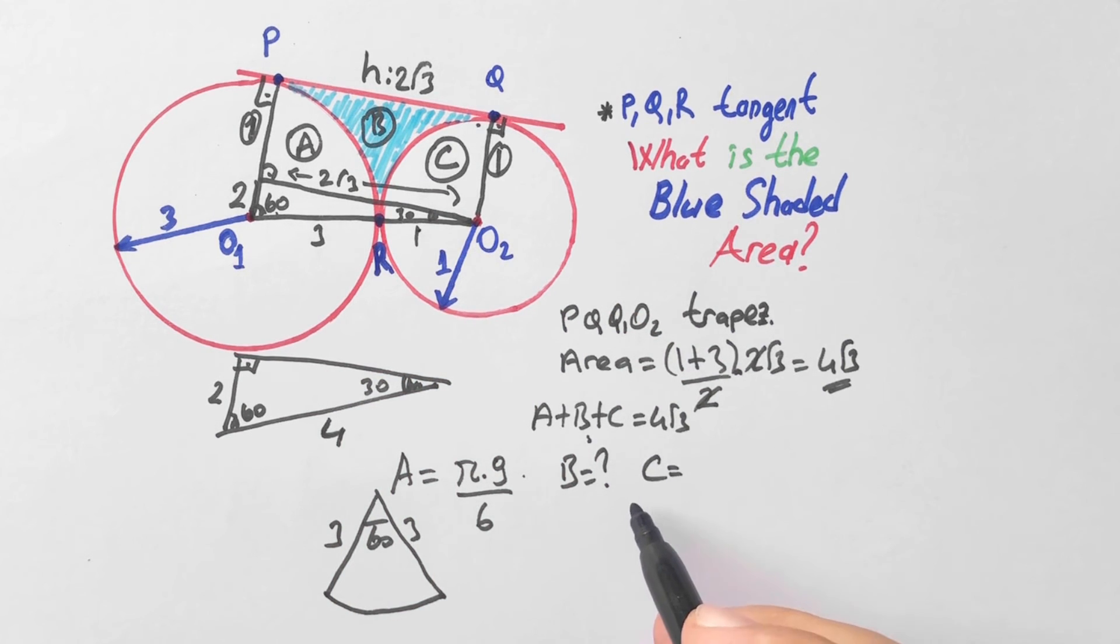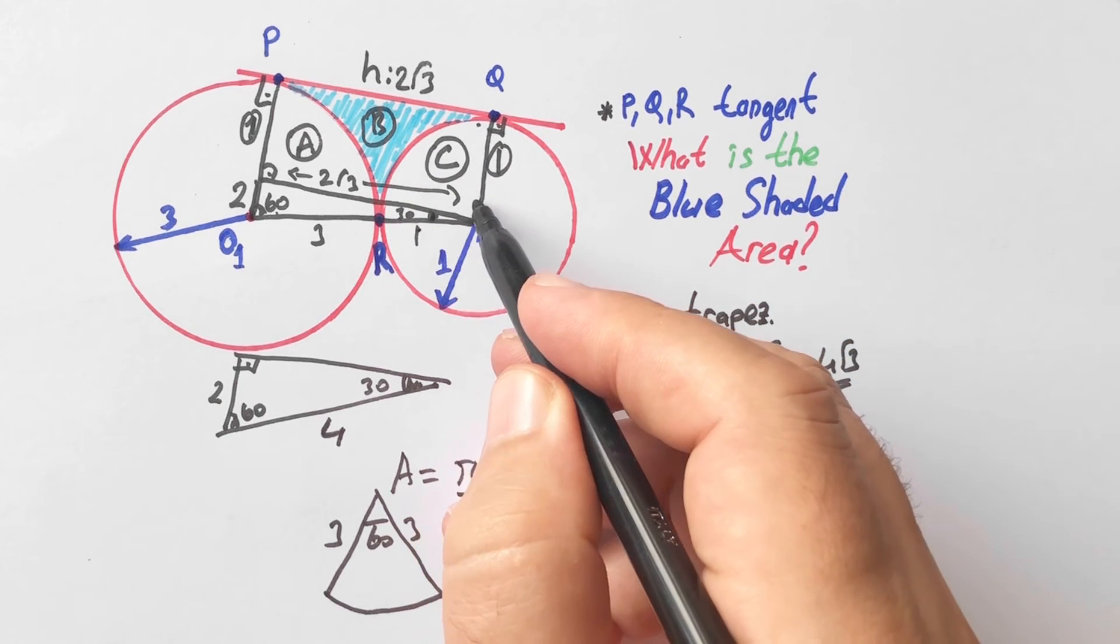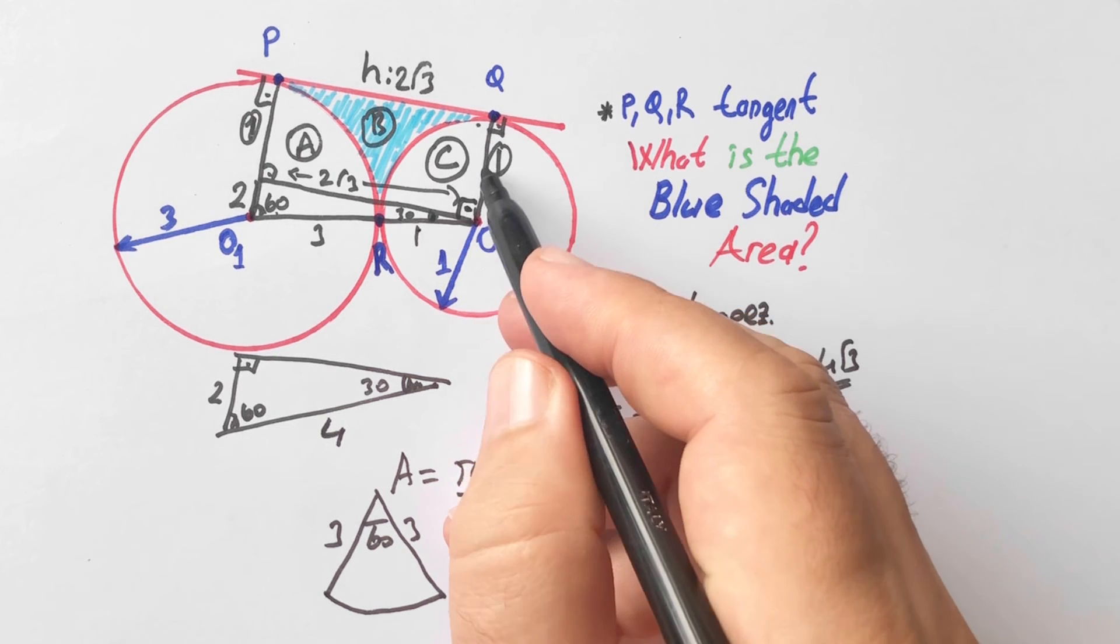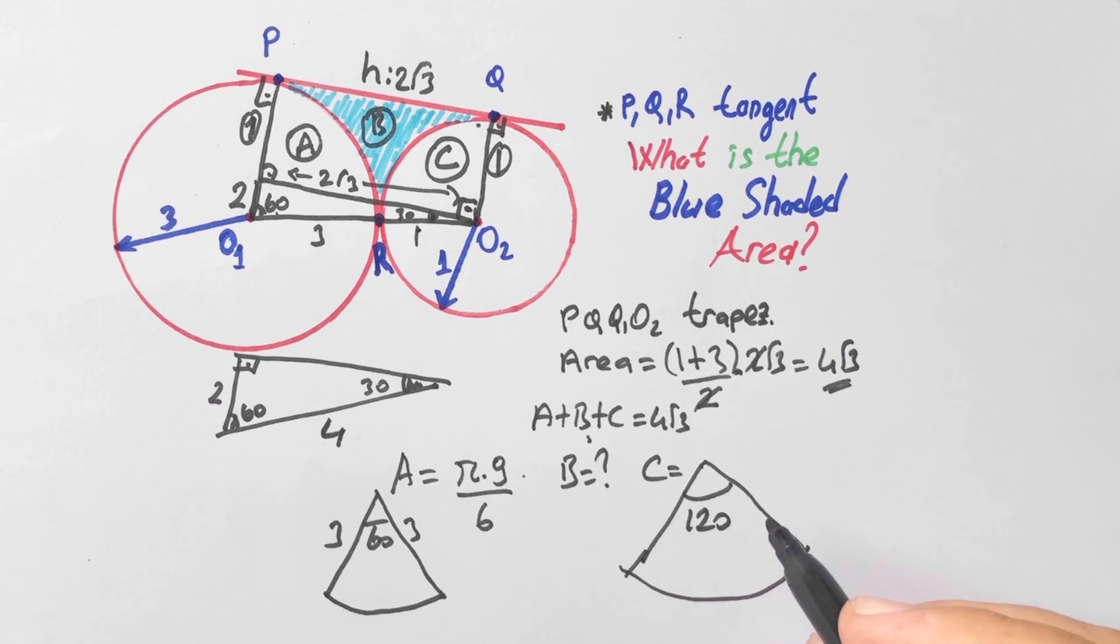C, let's draw the C sector. C is 1/3 of the circle, so angle is 120. C area is π over 3.